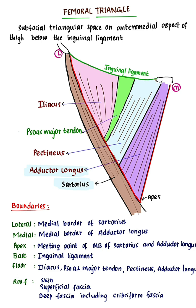Floor. It is muscular. From lateral to medial side, it is formed by the following muscles: iliacus, psoas major tendon, pectineus, and adductor longus.